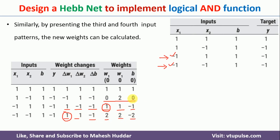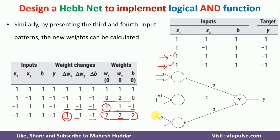Once we get the final weights from all training examples using the Hebb rule, the Hebb network for the logical AND function looks like this: X1 and X2 are the two inputs with associated weights of 2 and 2 respectively, and the bias weight is equal to -2. This is how the Hebb network looks for the logical AND function.